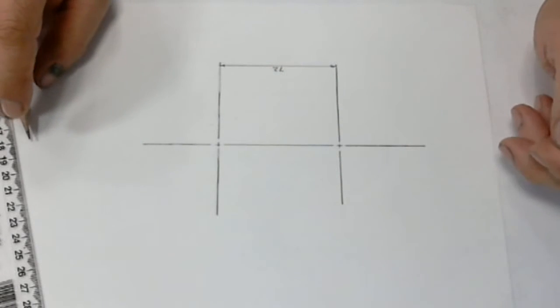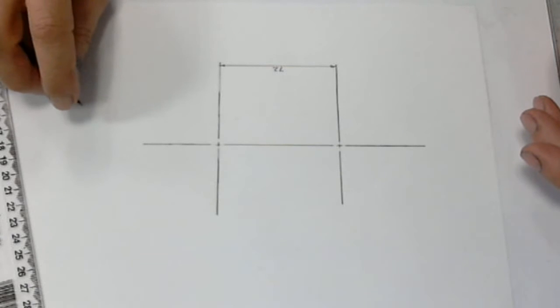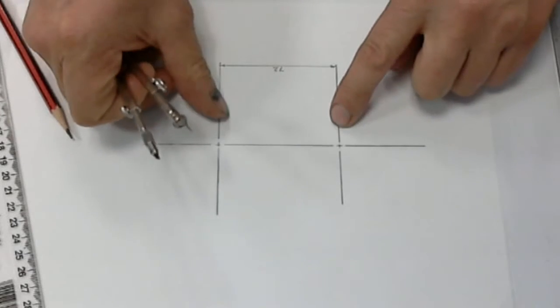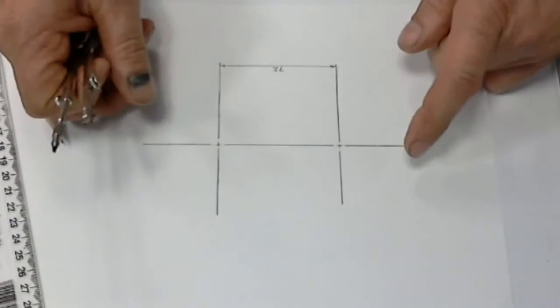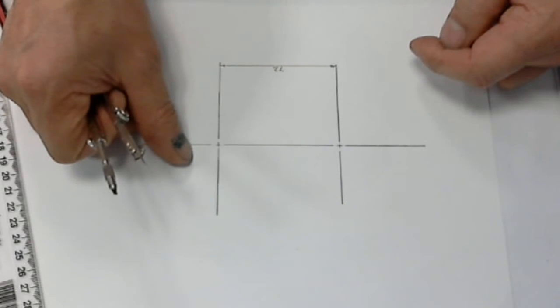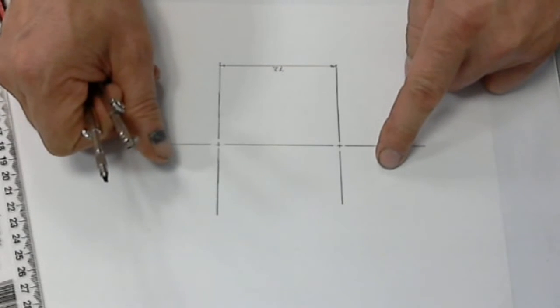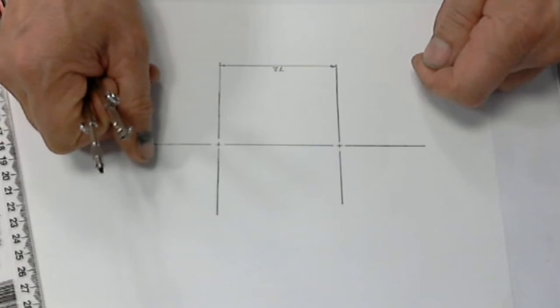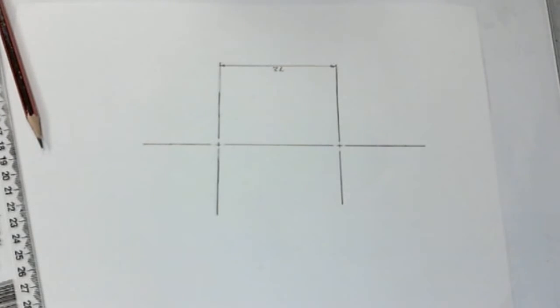This video is going to show how to create a set of tangential arcs that join a radius. The set of centers we've got here are 72 millimeters apart. There's going to be a 20 millimeter radius this end and a 30 millimeter radius this end with a tangent both internal and external to join them together into a sort of a cam looking shape.